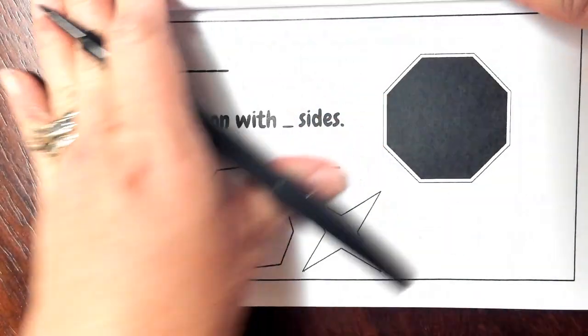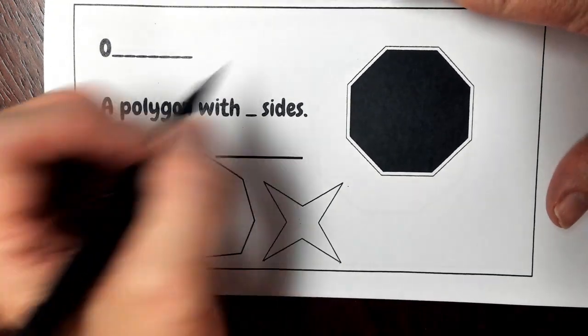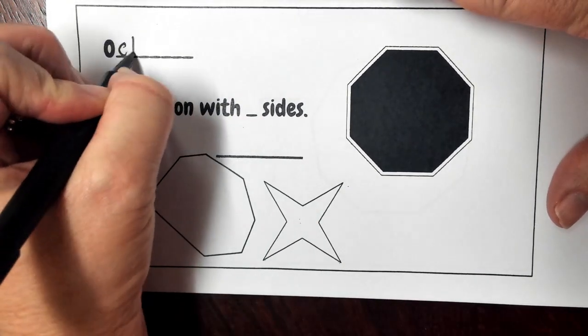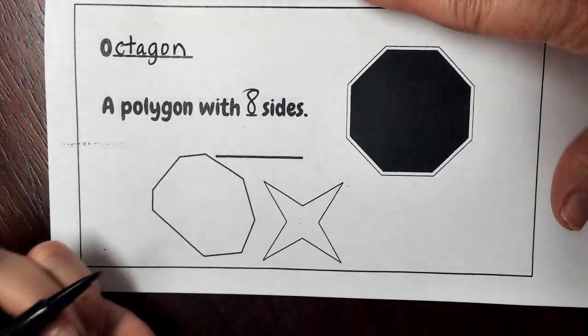All right, moving right along, we have our next polygon which is our octagon. An octagon is a polygon with eight sides.